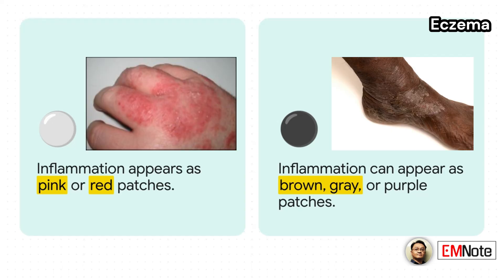It's also important to recognize that inflammation presents differently across various skin tones. On lighter skin, you'll typically see pink or red patches. On darker skin, however, these patches may appear brown, gray, or even purple, and any post-inflammatory discoloration can be much more pronounced.